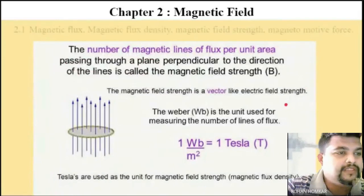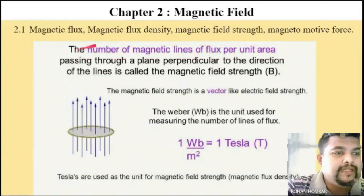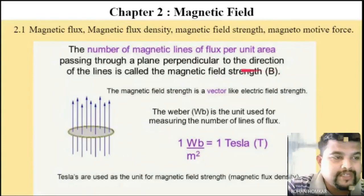Moving ahead with this, how we are going to identify this particular number of magnetic lines of flux per unit area? We are giving the value of magnetic field strength.